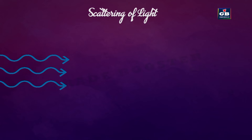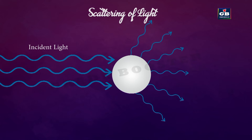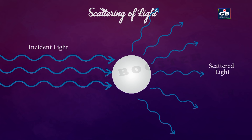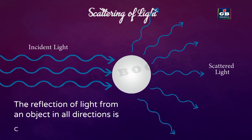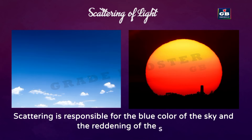Scattering of light: when a particle comes in the path of a light ray, the light gets reflected and scattered in all directions. The reflection of light from an object in all directions is called scattering of light. This scattering is responsible for the blue color of the sky and the reddening of the sun.